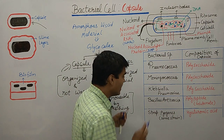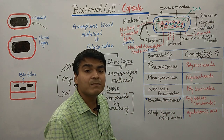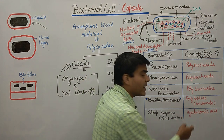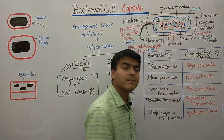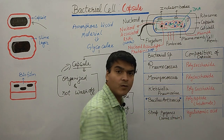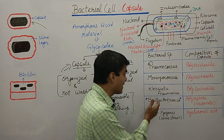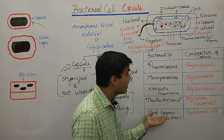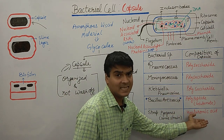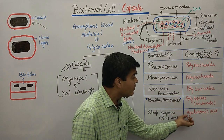An important exception is Bacillus anthracis — its capsule is made up of polypeptide. In this polypeptide, the basic amino acid is glutamate. Remember this; it is an important question examiners ask. In Streptococcus pyogenes, the capsule is made up of hyaluronic acid, but only in some specific strains.